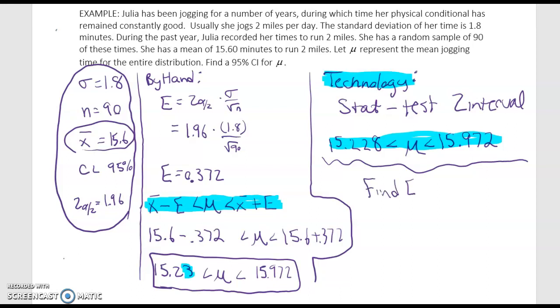And we learned how to do that taking our upper limit minus our lower limit and dividing by two when we were doing confidence intervals for proportions. It's the same for means. So we'll take 15.972 minus 15.228 and divide that by two and we'll get the error in this problem is 0.372.